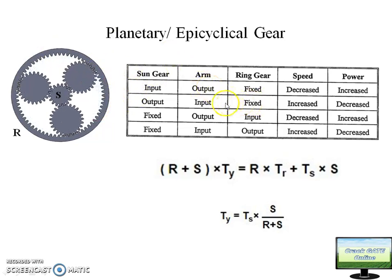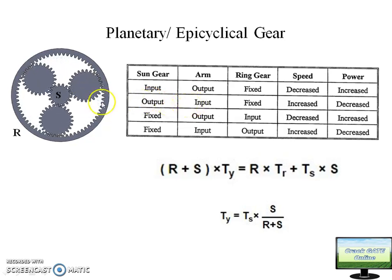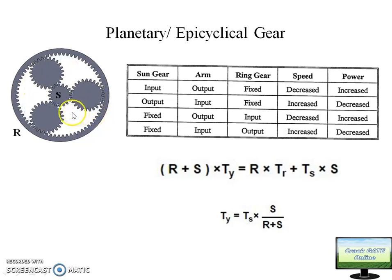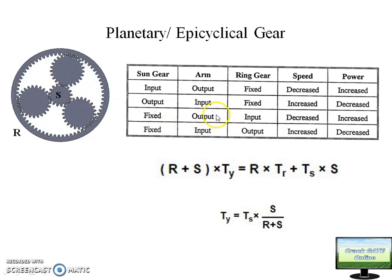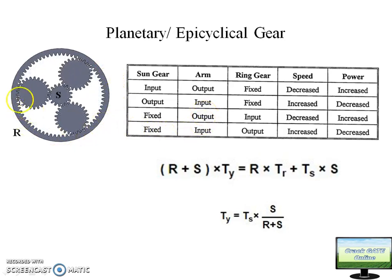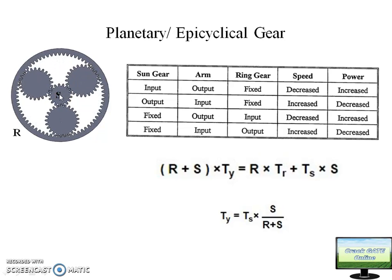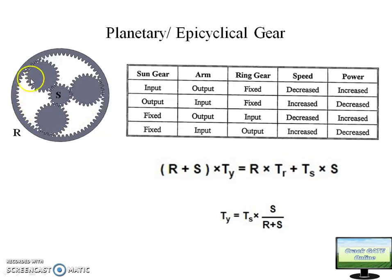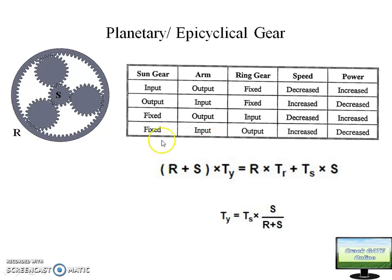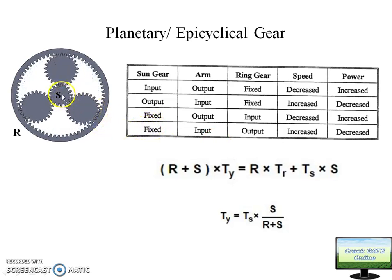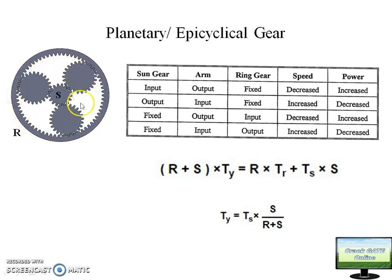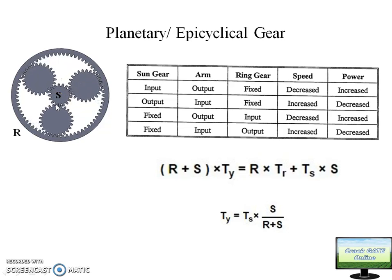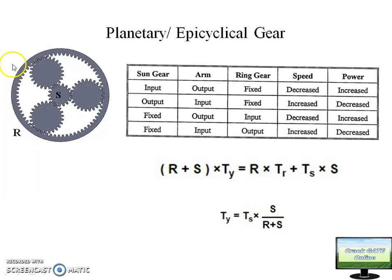There are other combinations too. You can fix the arm and give input from the ring gear, getting output from the sun gear. In a third case you can keep the sun gear fixed and give input from the ring gear, then the ring rotates and output is taken from the arm. In a fourth case you can fix the sun gear, give input from the arm, the planet gears rotate, and you get output from the ring gear.